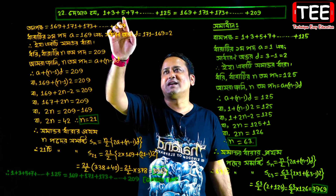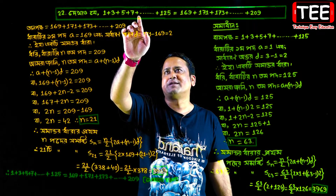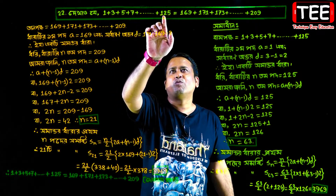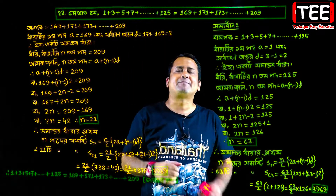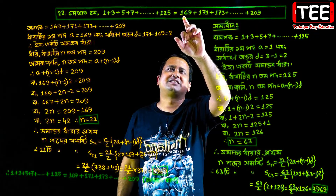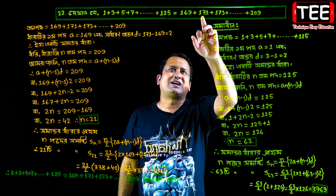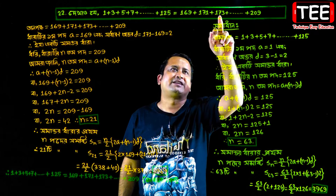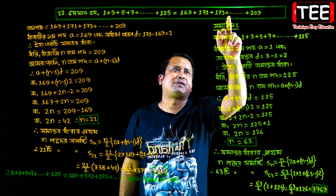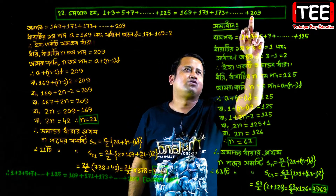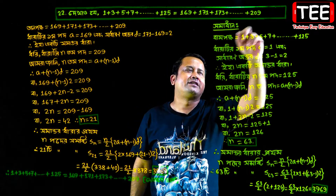1 plus 3 plus 5 plus 7 plus dot dot dot plus 125 equal to 169 plus 179 plus 71 plus 173 plus dot dot dot plus 209.